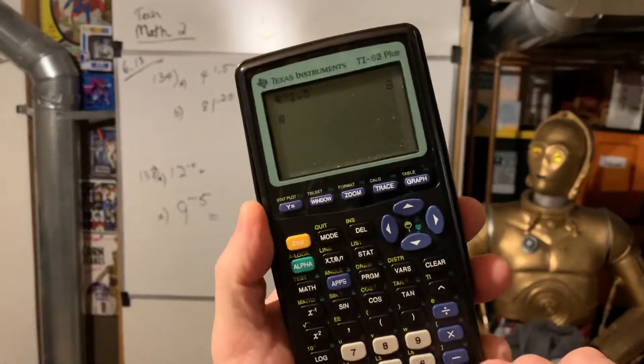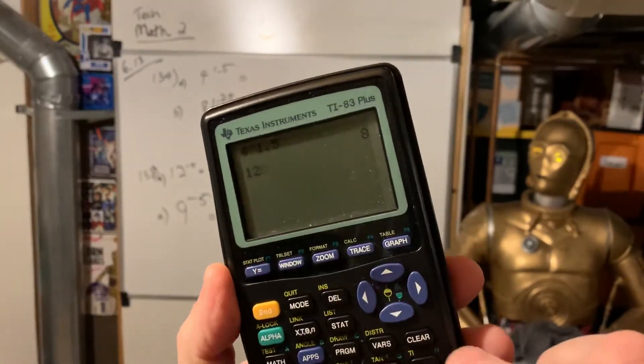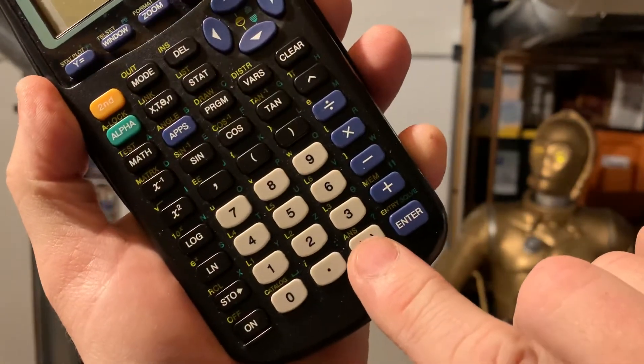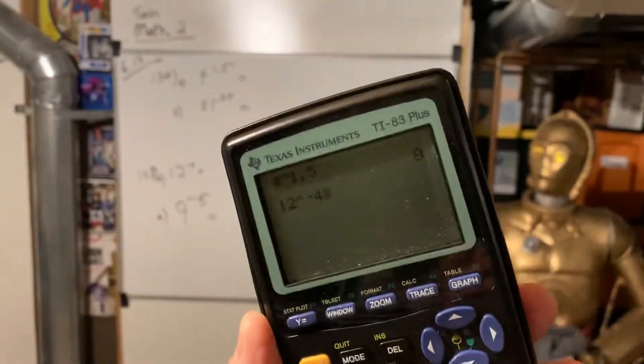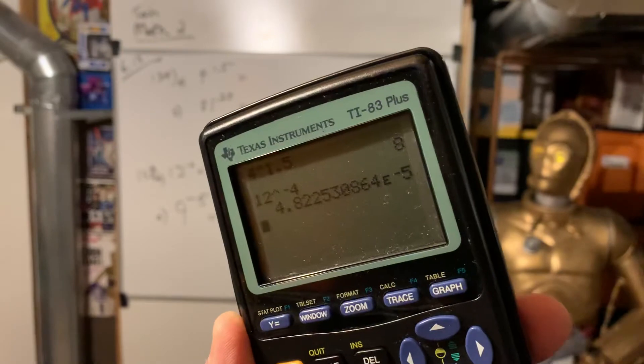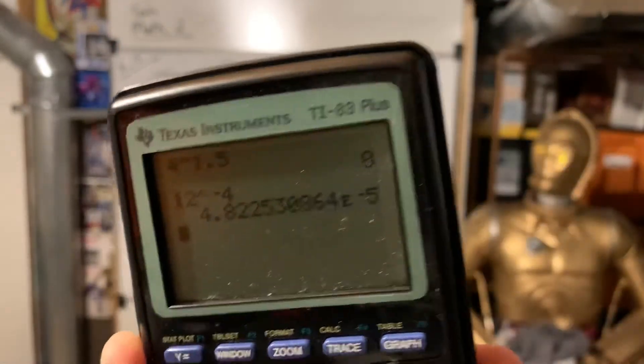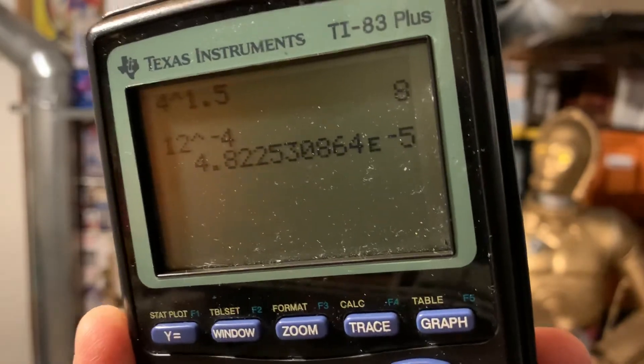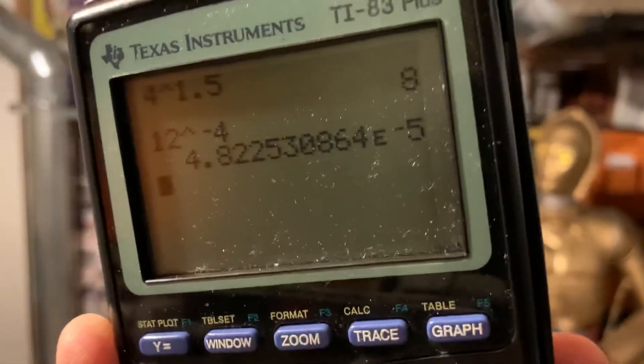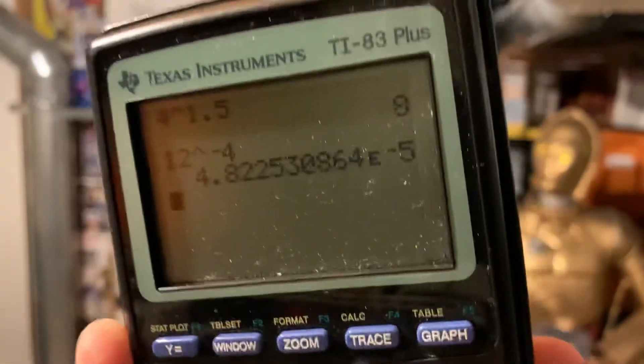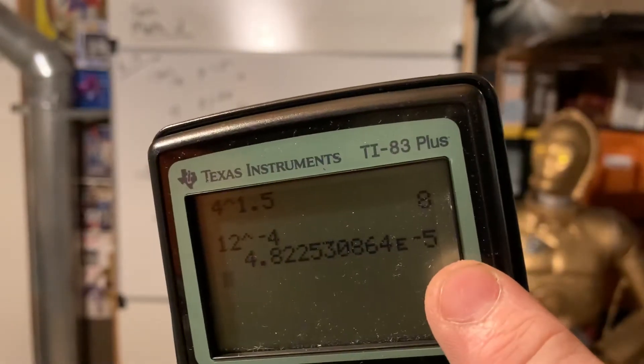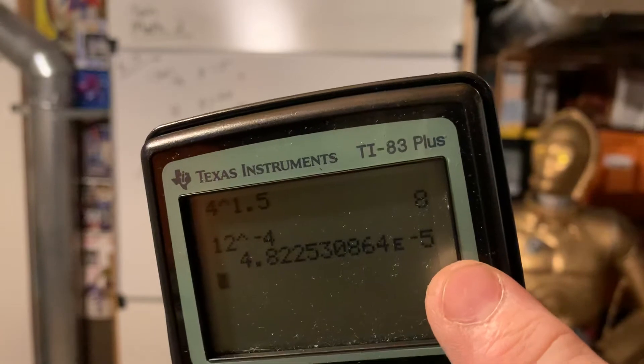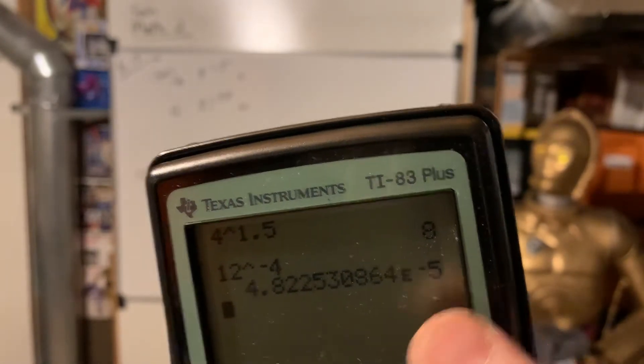Let's do a negative one. So look, 12 to the power, and now you use the negative button down there, negative 4. And that's going to be really tiny. So look at that readout. It says 4.822, and a lot of the students go, oh, so I go 4.8. No, no, no, no.